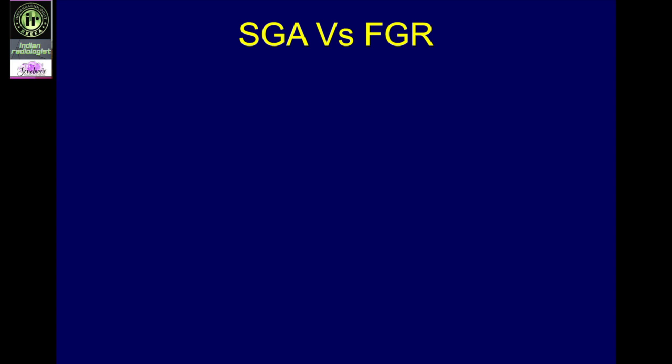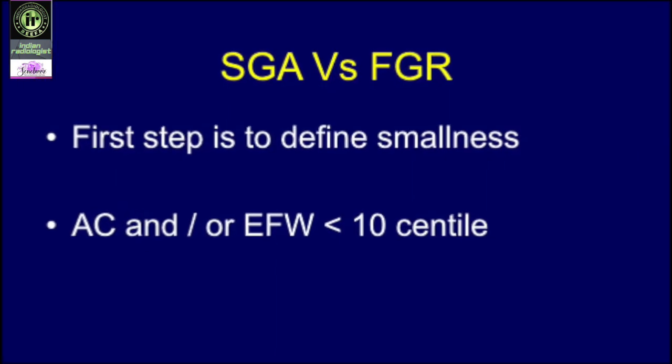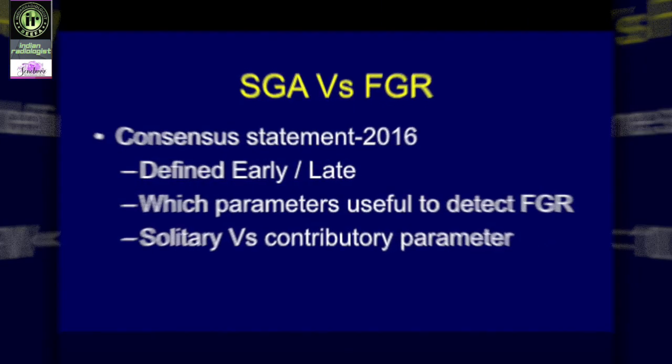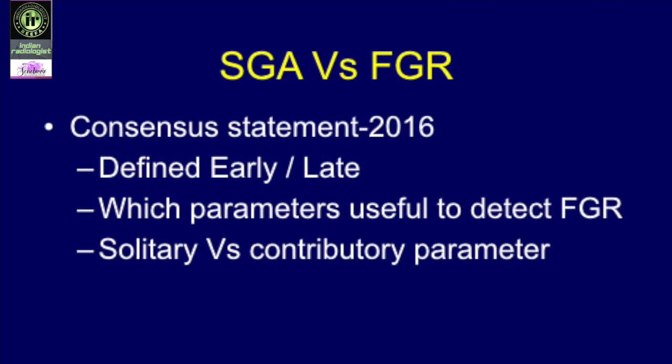When diagnosing SGA versus FGR, the first step is to define smallness: AC and/or EFW less than the 10th centile — it may be only AC, only EFW, or both. The 2016 consensus statement defined early versus late onset smallness and discussed which parameters are useful to detect FGR, differentiating between SGA and FGR, and which are solitary versus contributory parameters to diagnose growth-restricted babies.